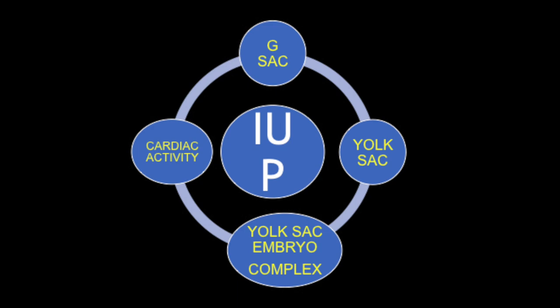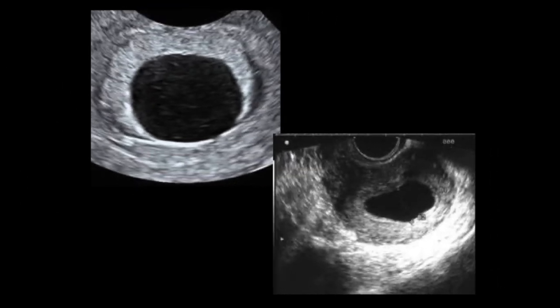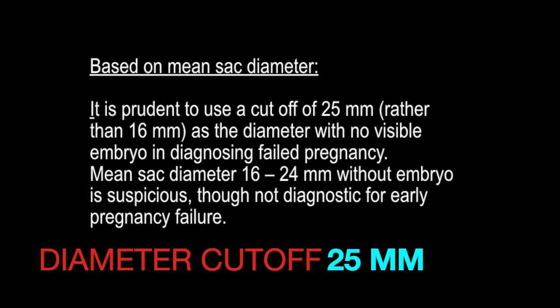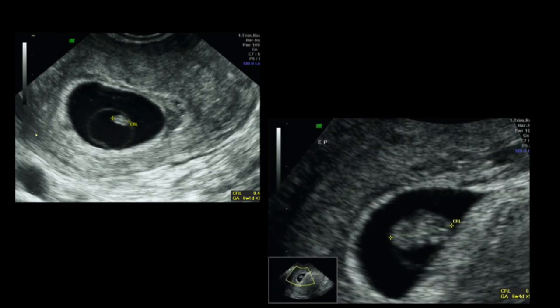Knowing the normal events, we now move on to diagnosing early pregnancy failure and the criteria to be applied. All these criteria are from the Society of Radiologists and Ultrasound consensus meeting 2012, which gives clear-cut guidelines on how to report a first trimester ultrasound. Our aim is to prevent any inadvertent loss or termination of a potentially viable pregnancy. It's prudent to use a cut-off of 25 mm mean sac diameter with no visible embryo in diagnosing failed pregnancy. Any mean sac diameter less than 24 mm without an embryo on the first scan should prompt a follow-up.